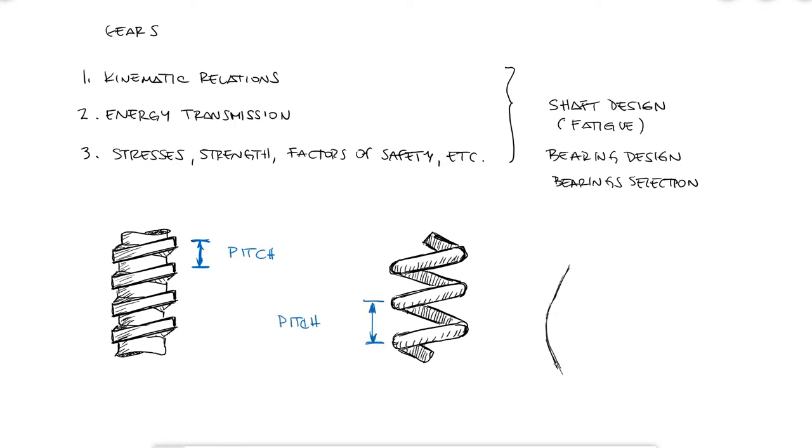If we look at a couple of teeth of a spur gear, where would you define the pitch, or the distance between one tooth and the next? Would it be at the base or at the top? Would it be a straight line distance, or over the circumference of a circle?